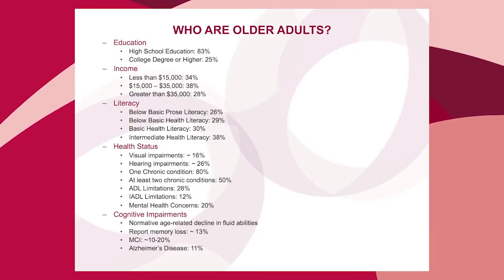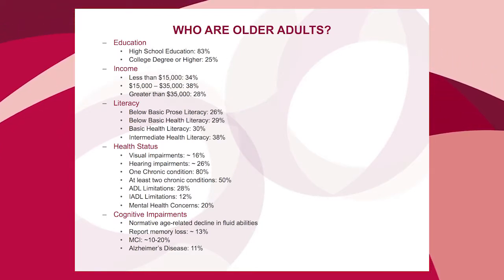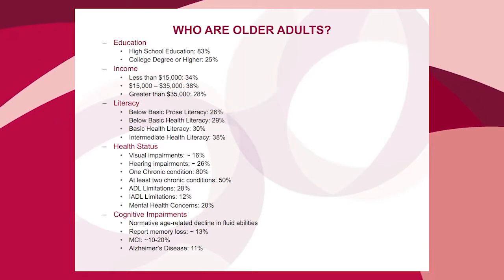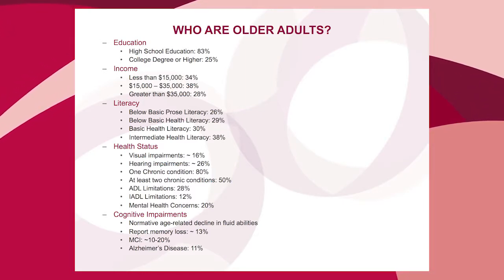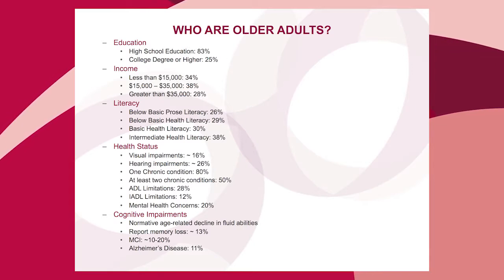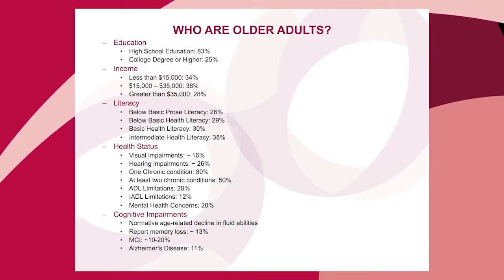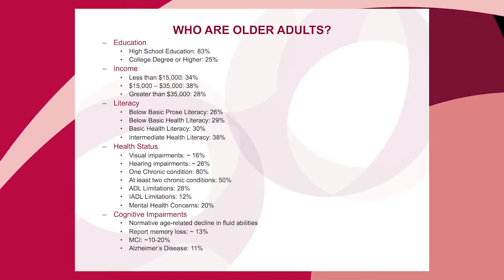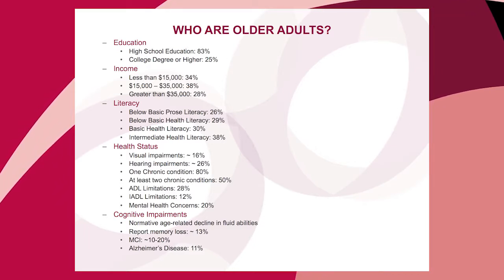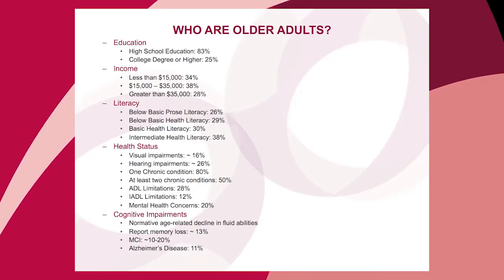There is also diversity in terms of education. Although people over 65 are getting more advanced in educational attainment overall, about a quarter of older adults — and this is higher for subgroups such as minorities or those in older cohorts — have only attained a high school education.